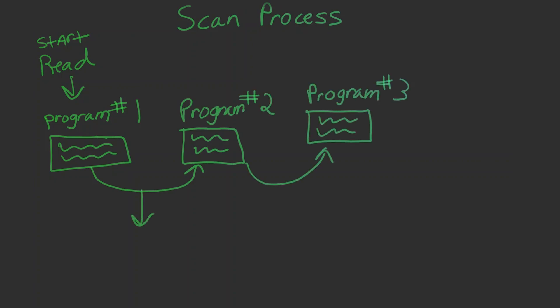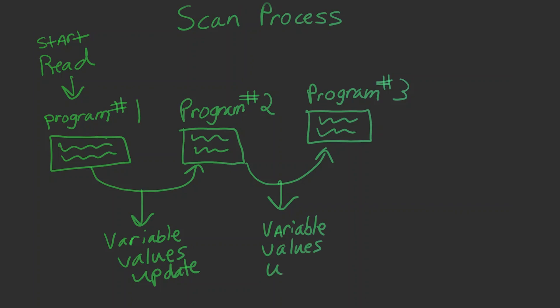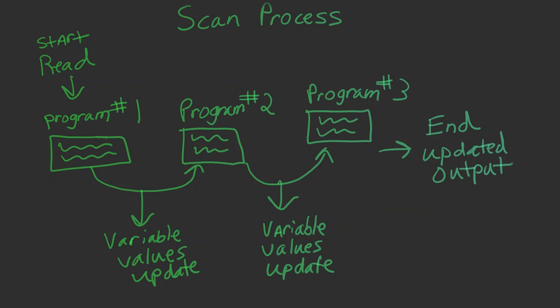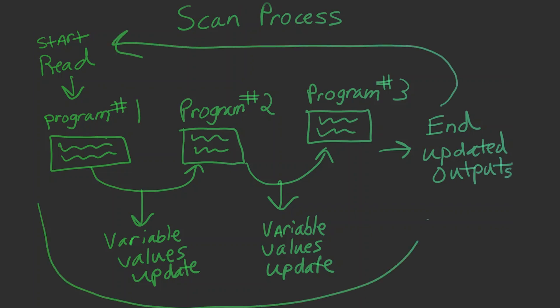As the individual programs are executed, variable values are updated to be used for subsequent programs. Finally, after all the programs have been completed, the controller updates the state of outputs on the controller and the process begins again. This entire process is called a scan, and it is normally performed several times a second, varying depending on the complexity of the programs.